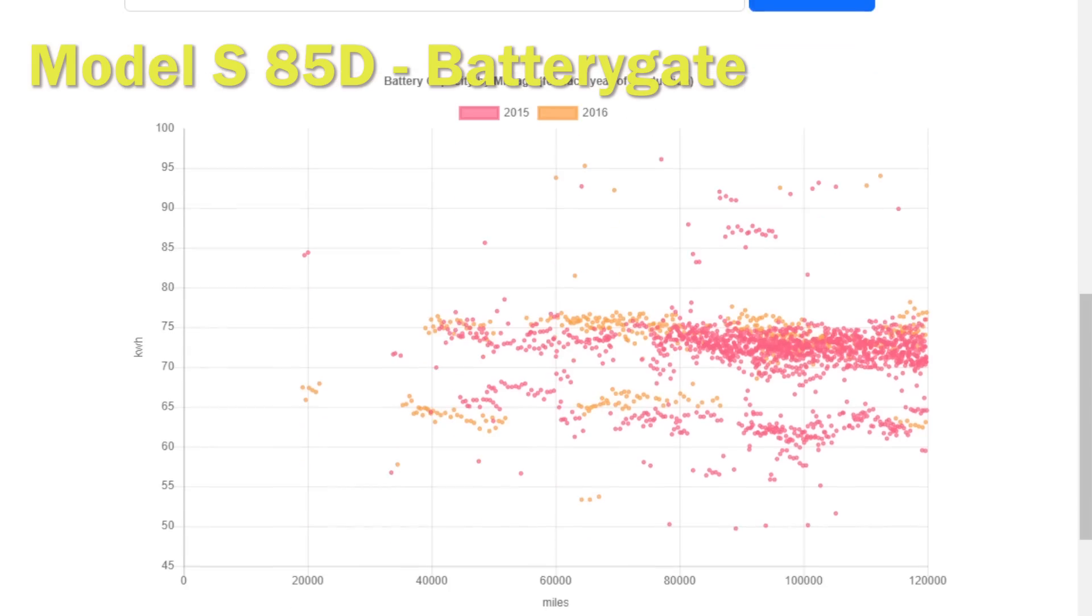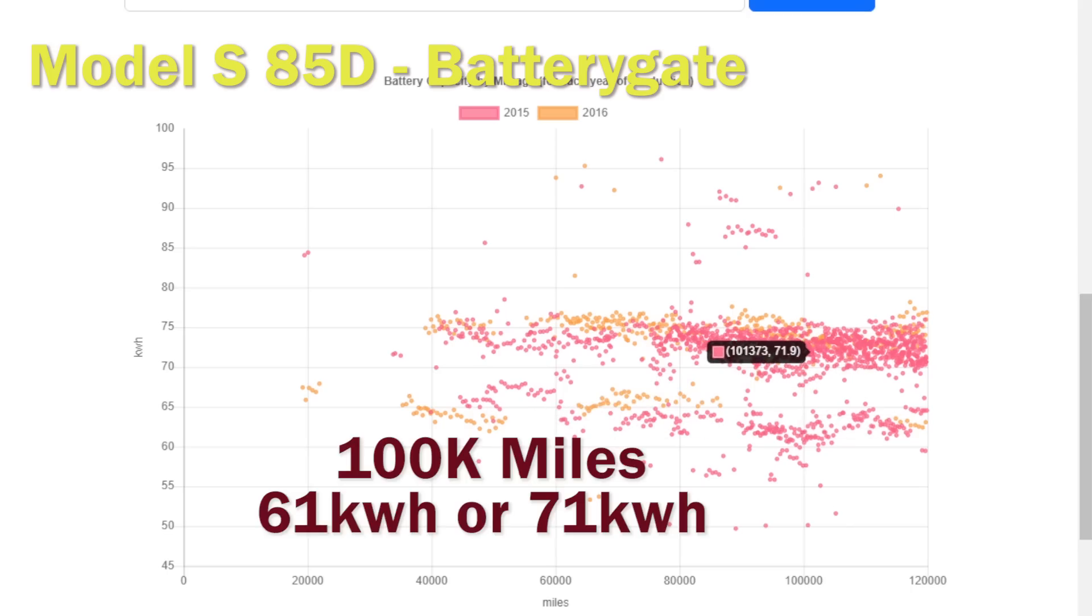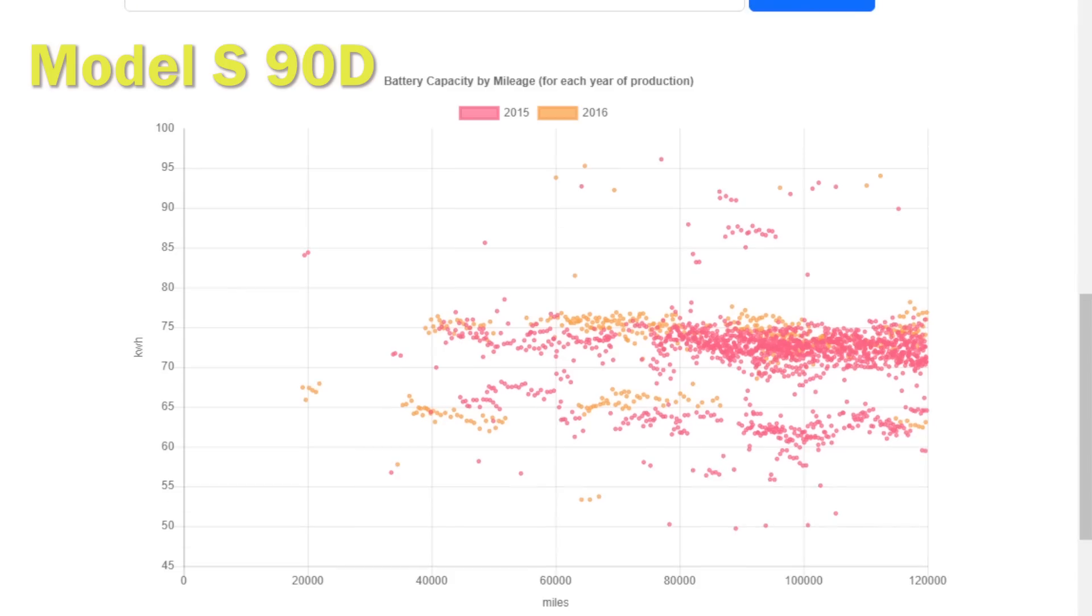We're now going to step back in time a little and look at the original Model S 85D, and for those who remember, this was the battery gate car. There seems to be two cohorts here. There's some cars that still seem to hang on to 71 kilowatt hours of battery, which is actually pretty good because these only had 76-77 to start with, and then there's a chunk that seemed to be down to 61 kilowatt hours. Don't know whether this is battery gate, whether this is replacement batteries who knows, but there seems to be a marked difference between two different batteries going on here.